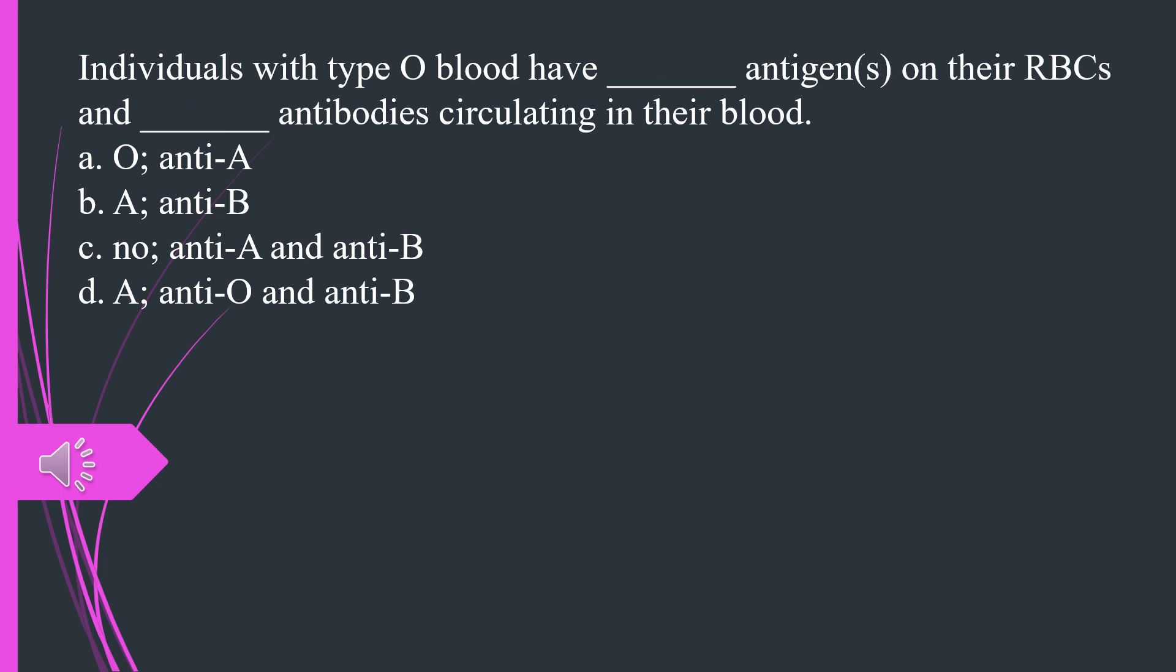Individuals with type O blood have what antigens on their RBCs and what antibodies circulating in their blood. A. O, anti-A B. A, anti-B C. No, anti-A and anti-B D. A, anti-O and anti-B. The answer is C, no antigens, anti-A and anti-B.